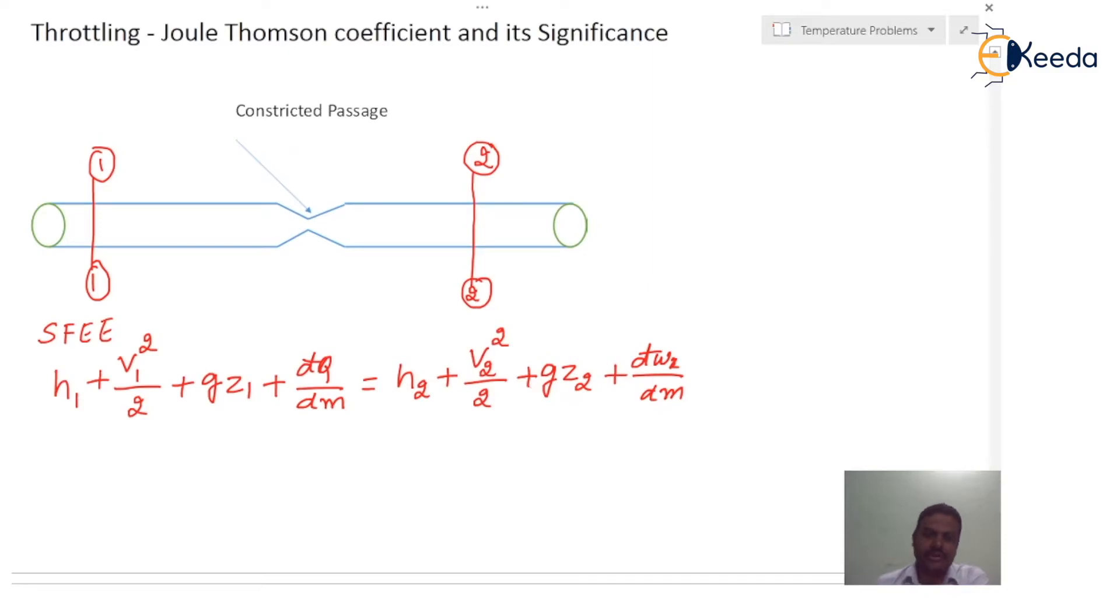Since there is no shaft work, this term becomes zero. There will not be heat transfer also, and there will be negligible potential energy. The equation reduces to h1 + v1²/2 = h2 + v2²/2.